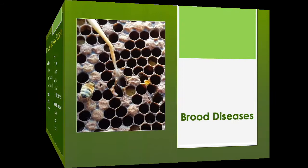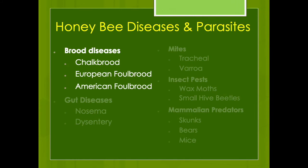Let's talk about brood diseases first. Although there are others I'm not really going to cover here, such as sacbrood and some others because they're less common, the main three that as a beginning beekeeper you need to be aware of are chalk brood, European foulbrood, and American foulbrood.